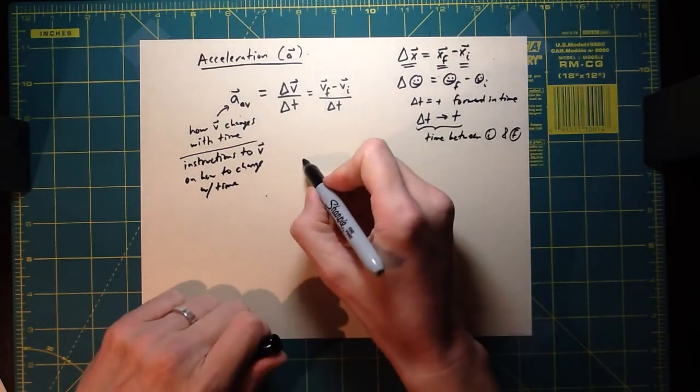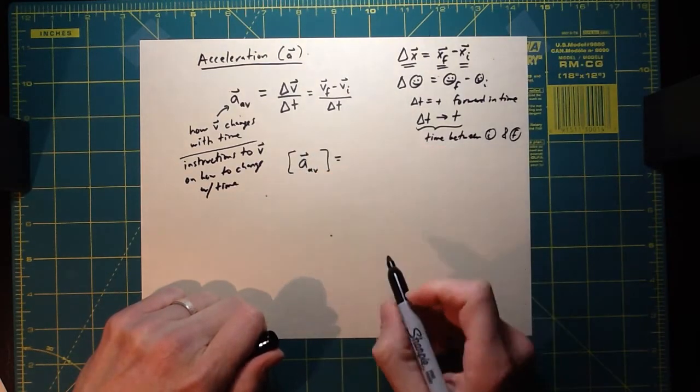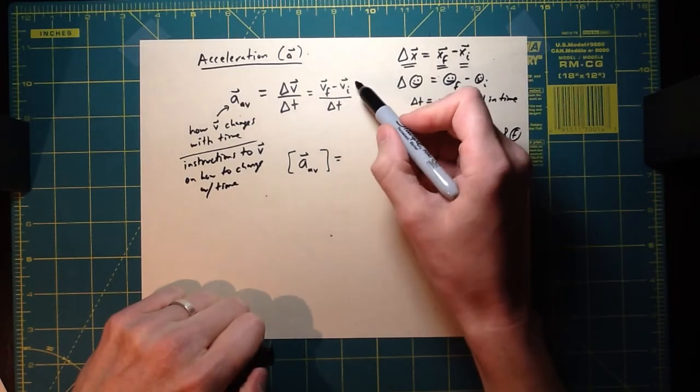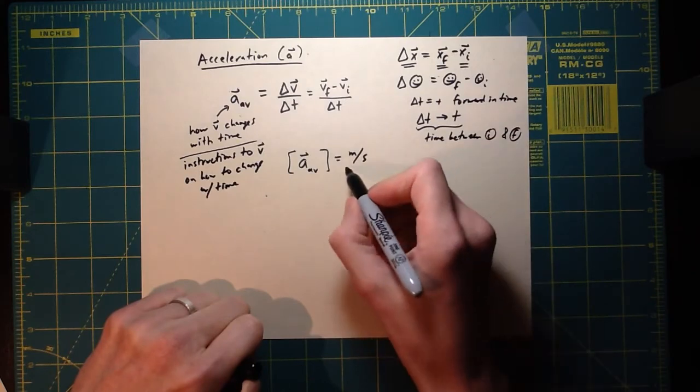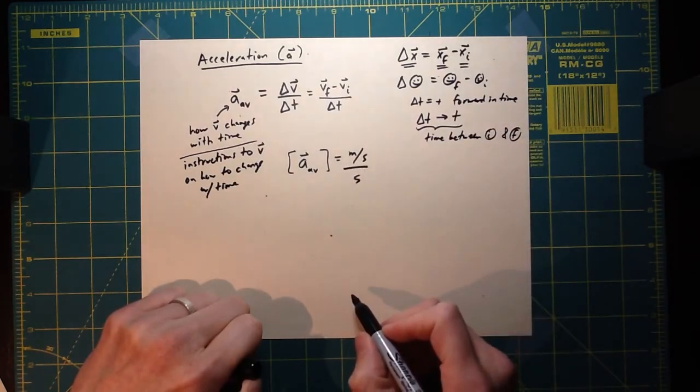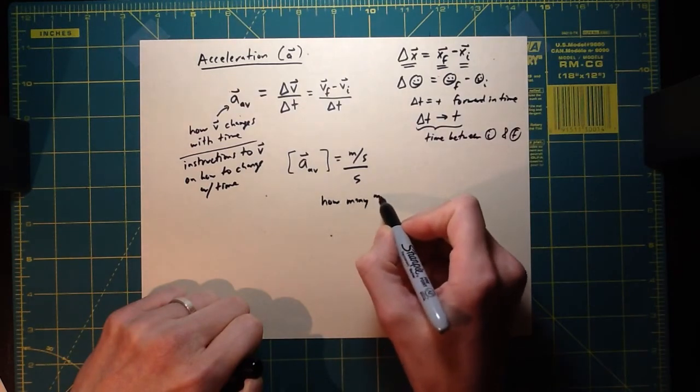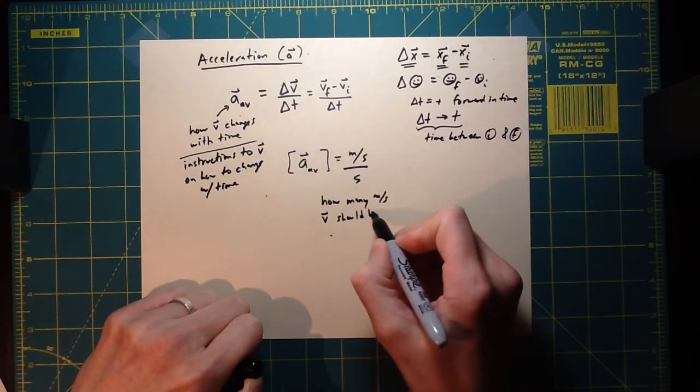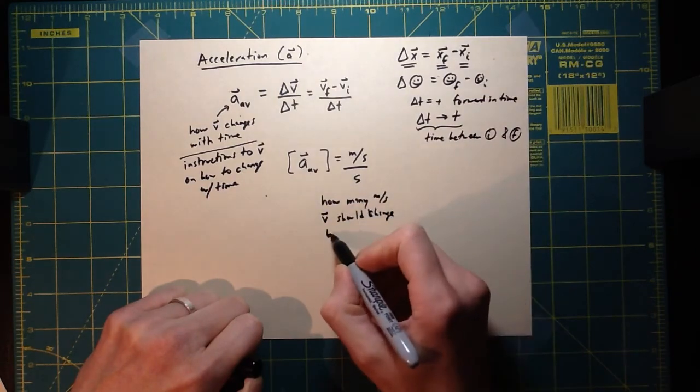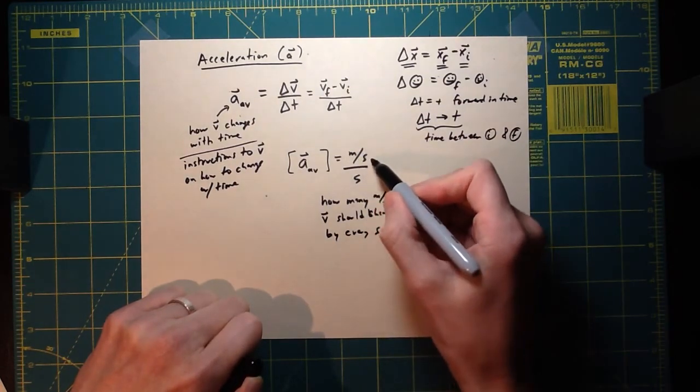So let's take a look at the units of this. Well the units, well the numerator is going to be a difference in velocity, so that's meters per second. And then the denominator is in seconds. So you can literally think of this as the acceleration is how many meters per second velocity should change by, should change every second. So how many meters per second should the velocity change by in a second.